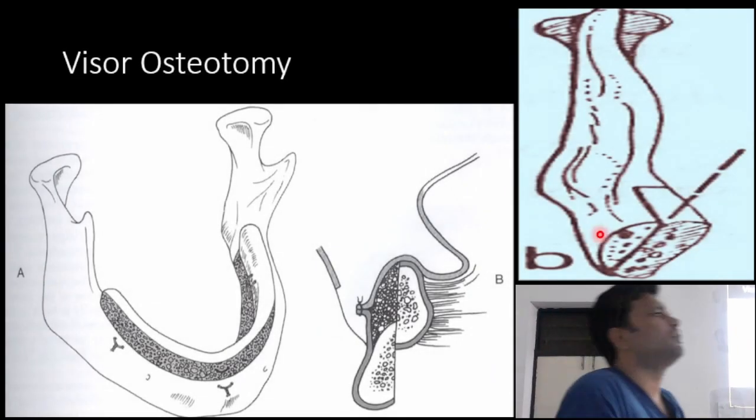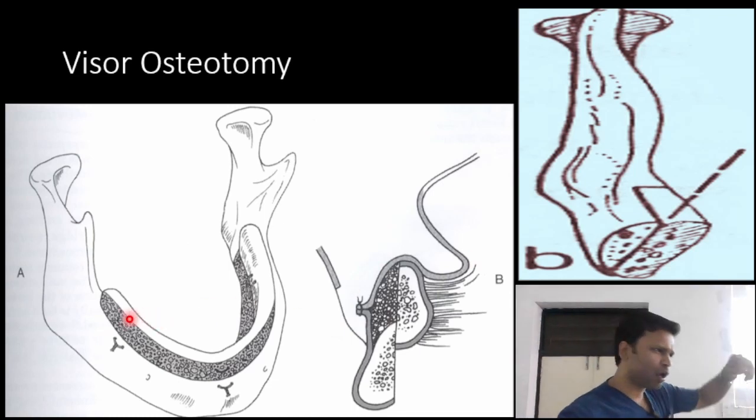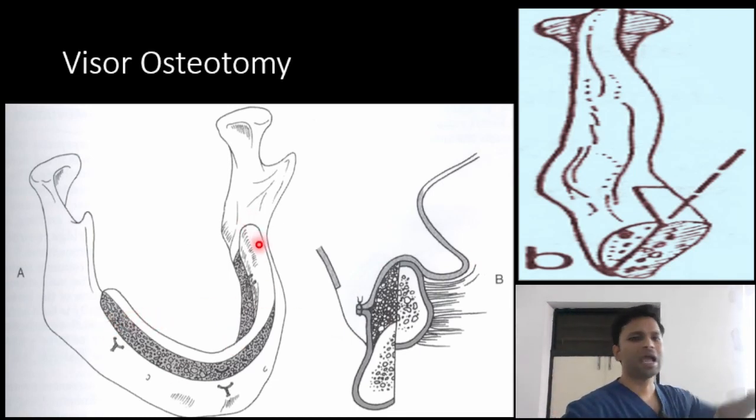Then there is something called as a visor osteotomy. In this, along the denture bearing area, we just give a vertical incision.